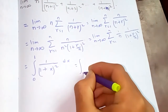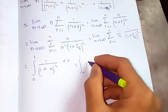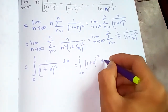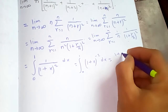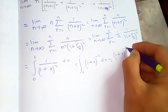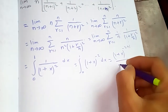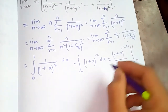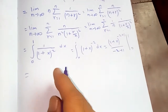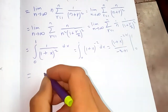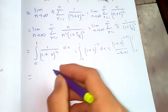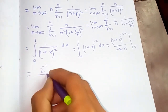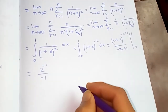Now we are going to evaluate this integral — this is easy. We have the integral of (one plus x) to the negative two dx, which equals (one plus x) to the power negative two plus one, over negative two plus one, evaluated from zero to one. Plugging in one, you get two to the power minus one over minus one.